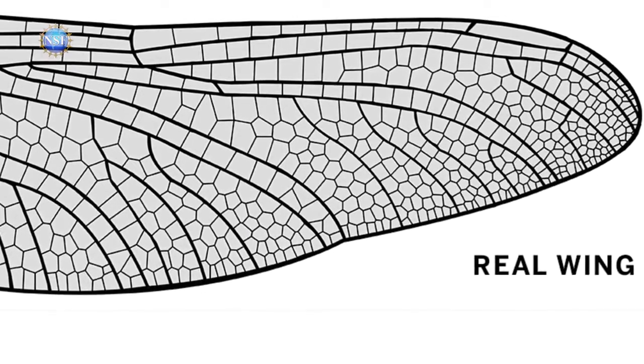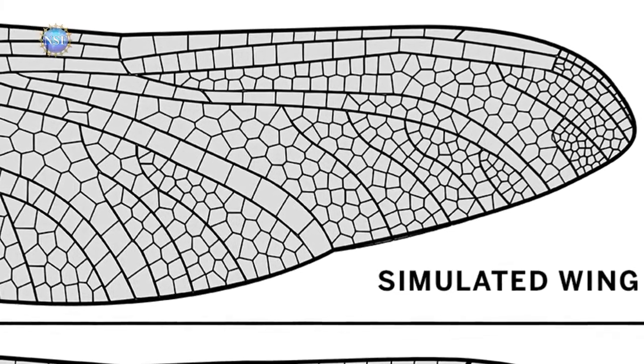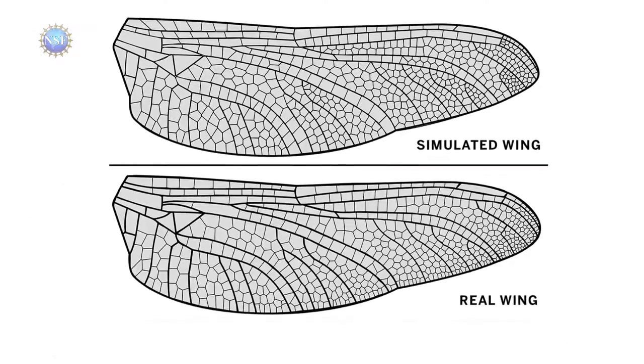The model works so well, it sometimes fools the researchers, generating patterns close to the real thing for even distantly related species. This may be helpful for studying the evolution of wing structure.